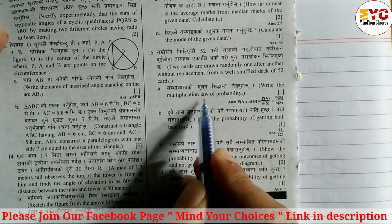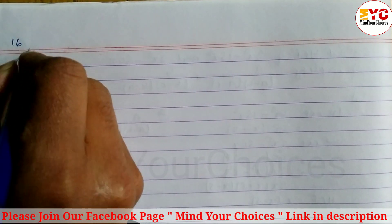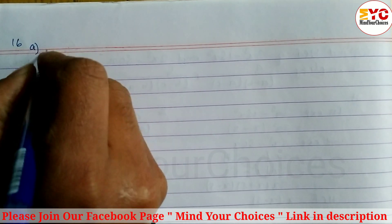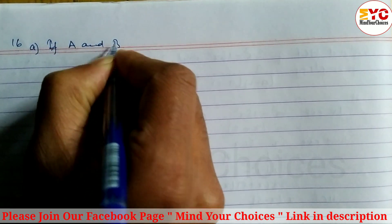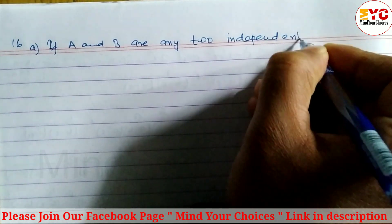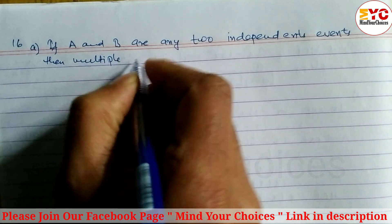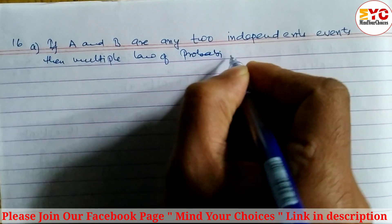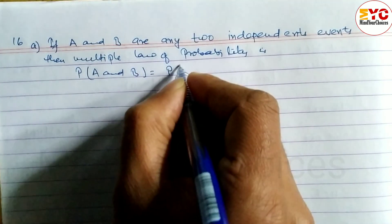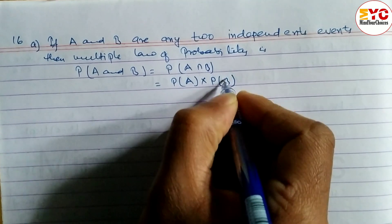For question part A, we have to write down the multiple law of probability. If A and B are any two independent events, then the multiple law of probability states that P(A∩B) is equal to P(A) into P(B). This is formula one for question number A.